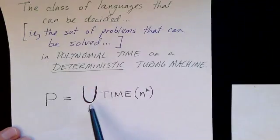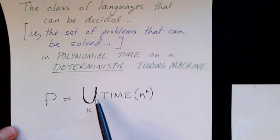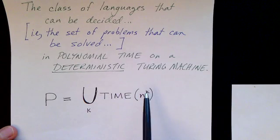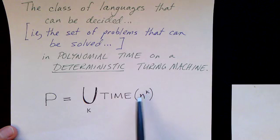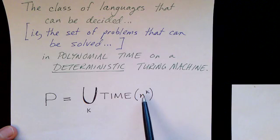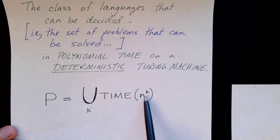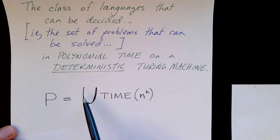So formally we can specify that this way. Here's a union over all possible exponents. So this includes the problems that are in class n squared and problems that are n cubed and so on for all k. These are the problems that can be solved in polynomial time on a deterministic Turing machine.